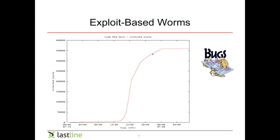Luckily, we're seeing less of these exploit-based worms today. They used to be a huge problem about 10 years ago because many operating systems like Windows at the time did not have basic stack protection, so simple vulnerabilities could be exploited remotely. Today we have firewalls and better protection mechanisms against memory exploits, so remote exploitation has become more difficult. Thankfully we're seeing less exploit-based worms, but we're still seeing quite a number of email-based worms because people are still the weakest link in the chain.